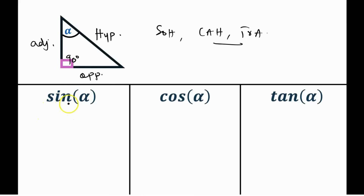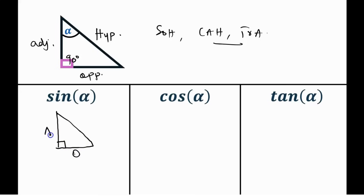Let's apply SOH-CAH-TOA. Redrawing the triangle: the right angle is here, the opposite side is here, the adjacent side is here, the hypotenuse is here, and our angle of interest is alpha. So sine of alpha equals the opposite side divided by the hypotenuse.